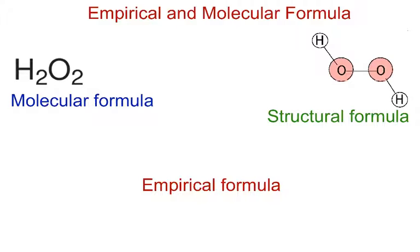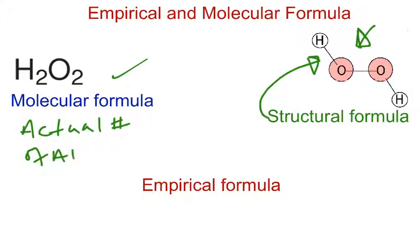The structural formula simply shows the structure of the compound in question. Now this compound right here is hydrogen peroxide, and this is how it's arranged. So the structural formula shows the arrangement or structure of atoms in the compound. The molecular formula on the other hand shows the actual number of atoms in the compound. So as you see here, hydrogen peroxide has two hydrogens and two oxygens actually in it.